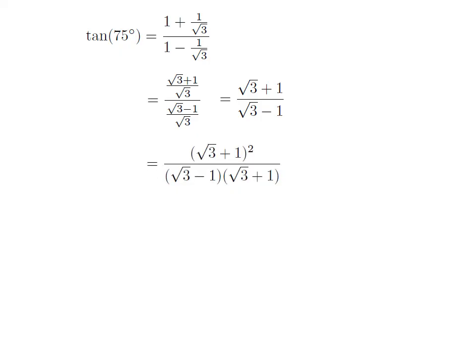Since multiplying the numerator and denominator by the same expression doesn't change the fraction, I have multiplied both the numerator and the denominator by (√3 + 1). Now, the numerator has become the square of (√3 + 1), and in the denominator it is (√3 − 1) multiplied by (√3 + 1).